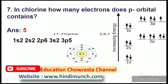Next question: in chlorine, how many electrons does the p orbital contain? Chlorine lo inni electrons p orbital lo onttay? Answer: 5. Chlorine's electronic configuration is 1s2, 2s2, 2p6, 3s2, 3p5. In the p orbital, there are 5 electrons in the 3p level.